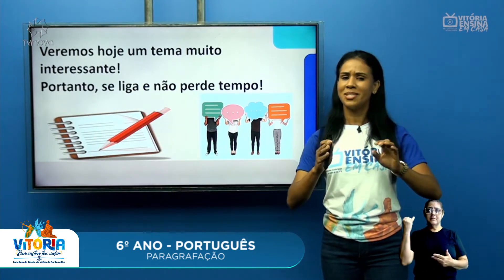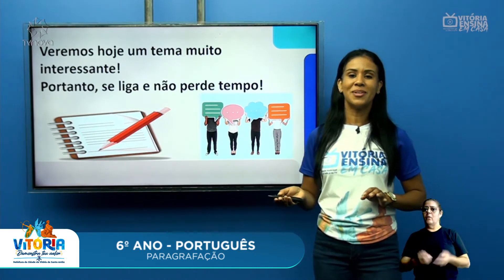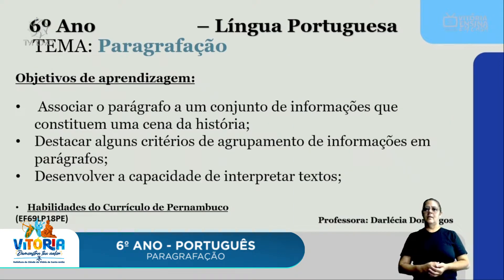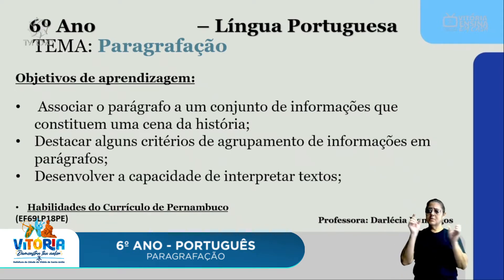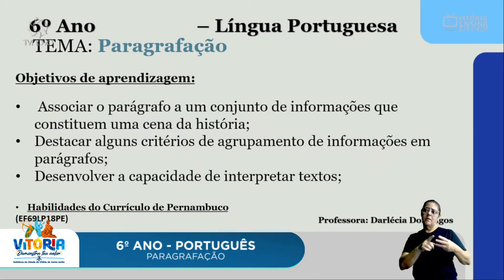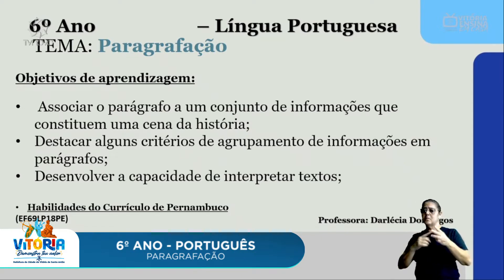O tema de hoje é paragrafação. Nós temos três objetivos de aprendizagem: o primeiro é associar o parágrafo a um conjunto de informações que constituem uma cena da história; o segundo é destacar alguns critérios de agrupamento de informações em parágrafos; e o terceiro é desenvolver a capacidade de interpretar textos. Esses três pontos são essenciais quando a gente está trabalhando com texto.